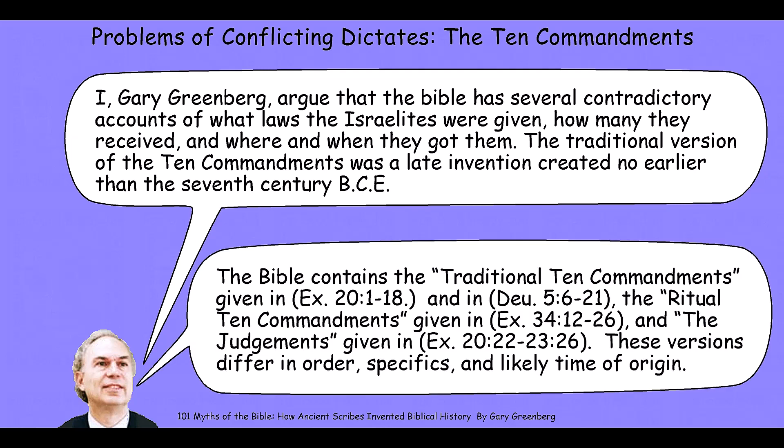The Bible contains three different versions of the Ten Commandments story. There's the traditional Ten Commandments, given in Exodus 20:1–18 and Deuteronomy 5:6–21. Then there is what's called the Ritual Ten Commandments, given in Exodus 34:12–26. Finally, there is what's called the Judgments, given in Exodus 20:22 through 23:26. These versions differ in order, specifics, and likely time of origin. There isn't a single set of commandments presented unproblematically and completely consistently within the context of the Old Testament.